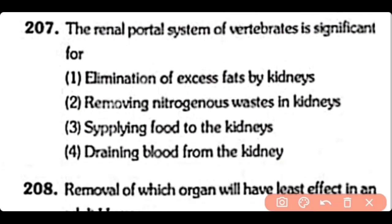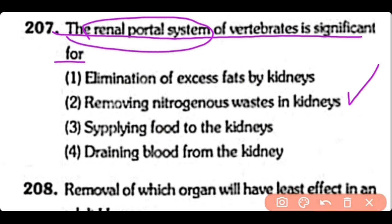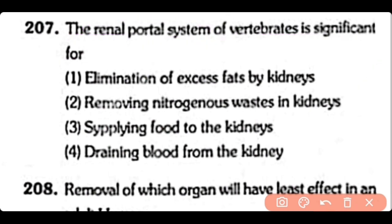Q207. The renal portal system of vertebrates is significant for: elimination of excess fat by kidney, removal of nitrogenous waste in the kidney, supplying blood to the kidney, or draining blood from the kidney. The correct answer is Option 2 — the renal portal system is important because it removes nitrogenous waste in the kidney.